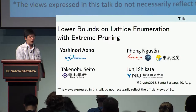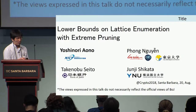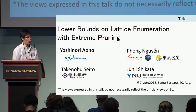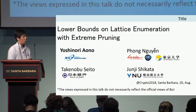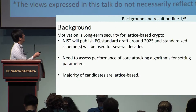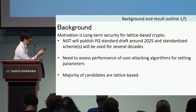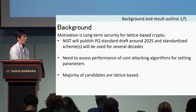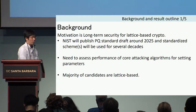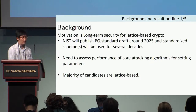My talk is about the lower bound for the cost of external pruning. The background motivation is the long-term security for lattice-based crypto.